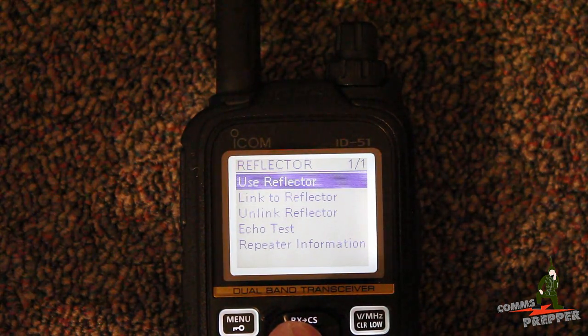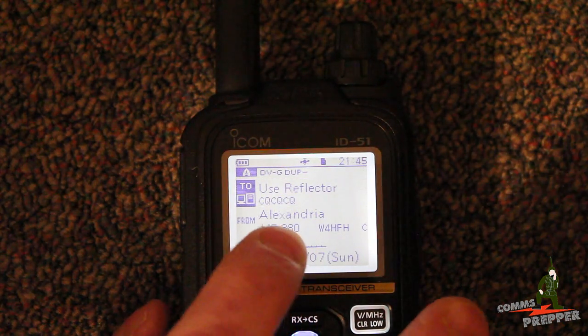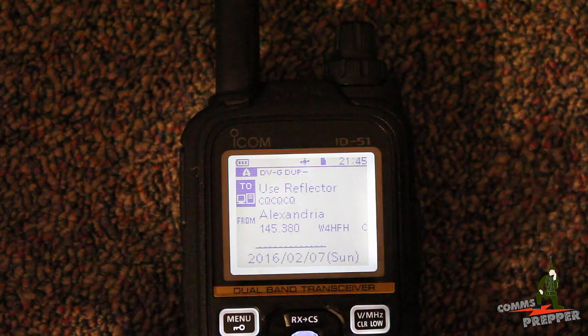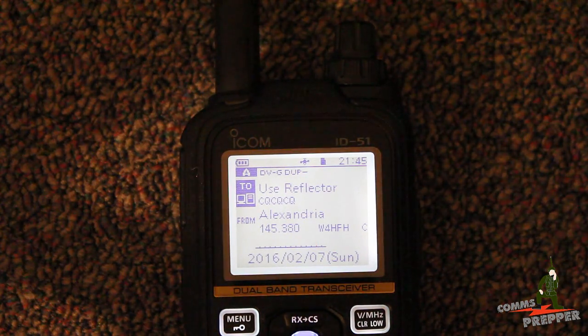We've already done the link. We've already made the connection. So now I'm going to hit use reflector. And now you can see it says CQCQCQ. So we have a link set up. Now we can talk to anybody we want to on the reflector.